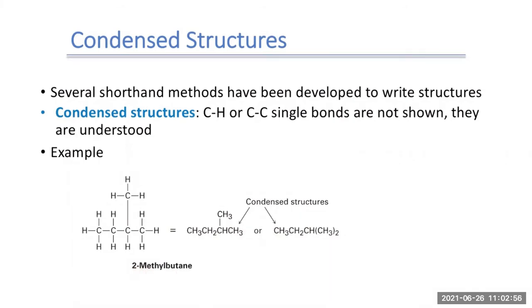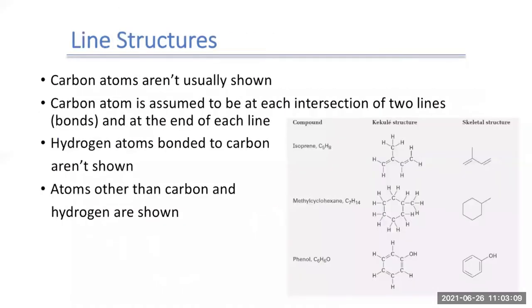But even condensed structures can become cumbersome when we have extremely large molecules. So if we have a really large molecule like taxol, it becomes extremely cumbersome to even draw the condensed structure. Instead, what we typically do in organic chemistry is we tend to draw what we call line structures or skeletal structures.